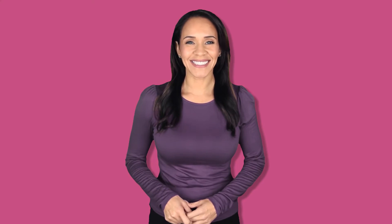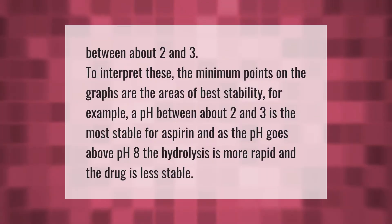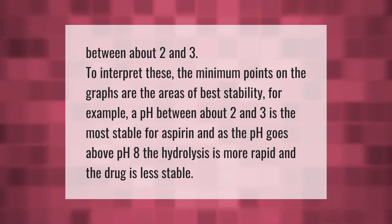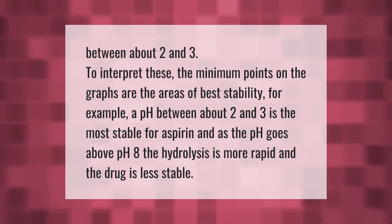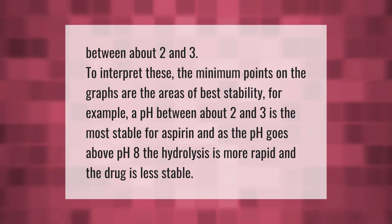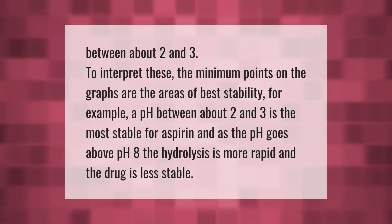To interpret the graphs, the minimum points represent the areas of best stability. For example, a pH between about two and three is the most stable for aspirin. As the pH goes above pH 8, the hydrolysis is more rapid and the drug is less stable.